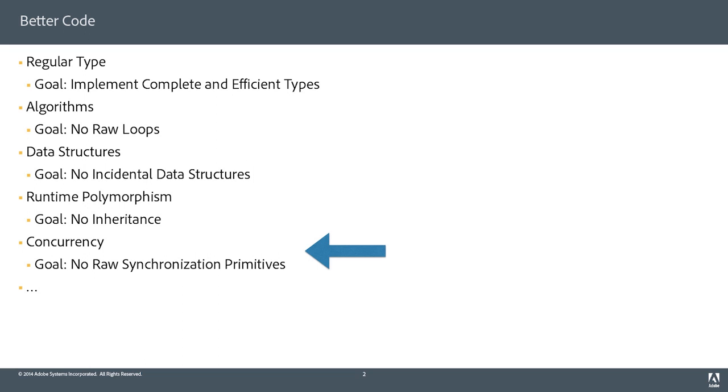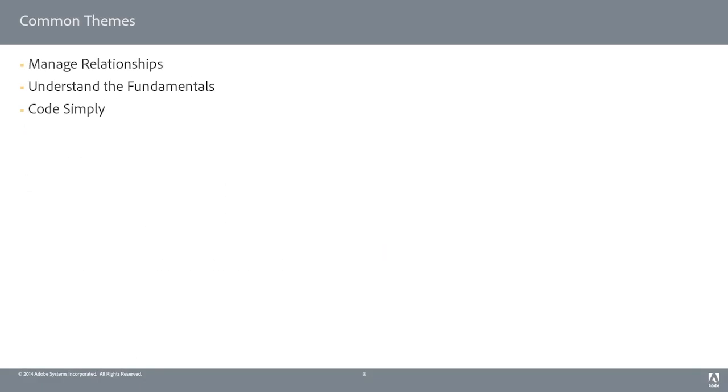This is one of my more recent talks. There's a common theme in all of these talks, which is that writing better code is about managing relationships — and I don't mean personal relationships, although I think computer scientists are bad at both. It's about understanding the fundamentals, learning to code simply, and learning to reason locally and equationally about your code.